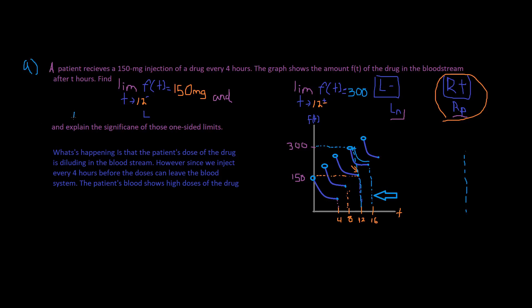Part B says explain the significance. So what's happening here is the patient's dose of the drug is diluting in his or her bloodstream. However, since we inject every four hours before the doses can leave the blood system, the patient's blood shows high doses of the drug. And so T stands for time.